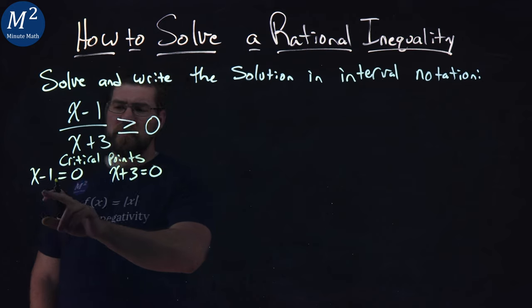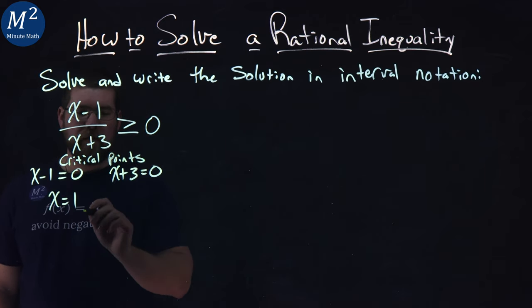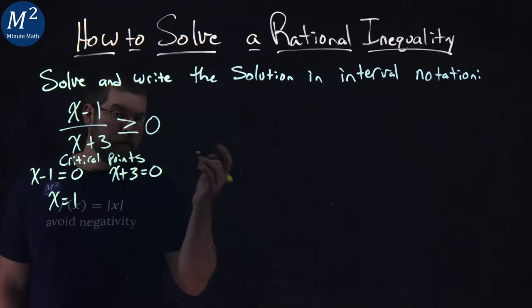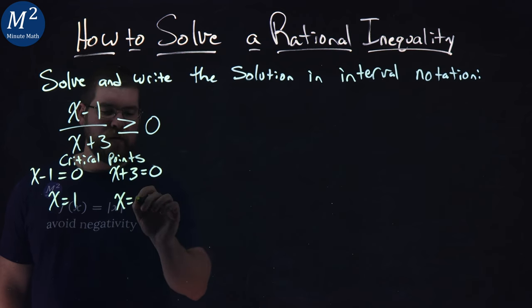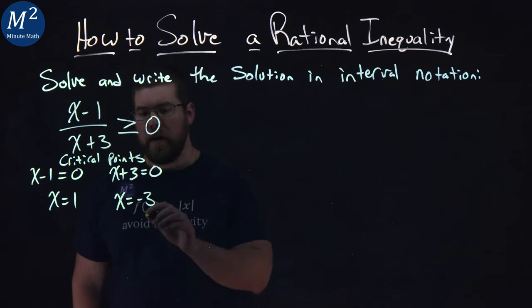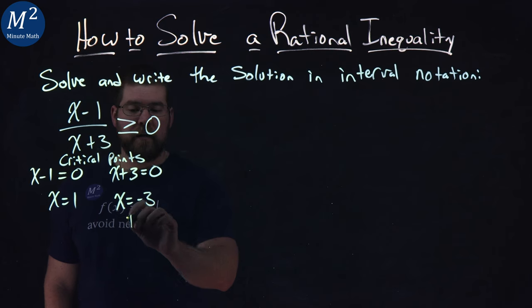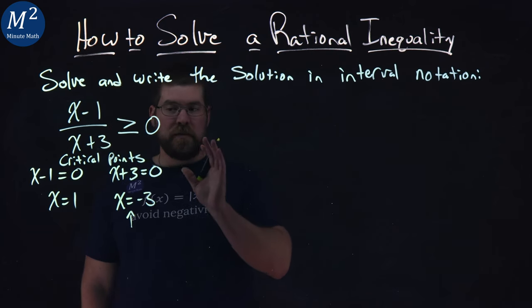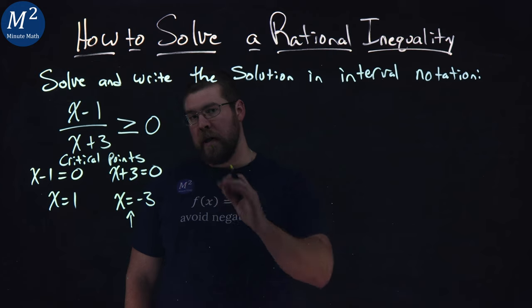First one, easy. Add 1 to both sides and x equals positive 1. Subtract 3 from both sides on the second one and x equals negative 3. Now notice this one's a little different here, the negative 3 is undefined, okay? So we want to keep that in mind when we get our answer.